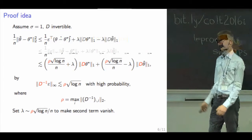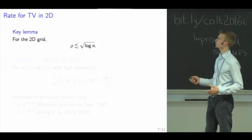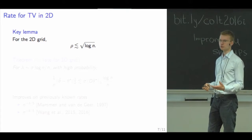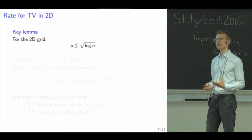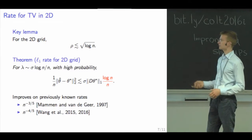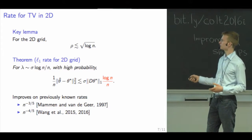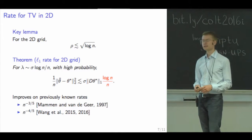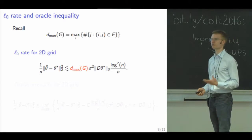In general D does not have to be invertible; we can work with the pseudo-inverse instead. The main quantity to analyze is rho, and the key result we can show is that rho is bounded up to only a log factor. This relies on having an explicit handle on the spectral decomposition of the associated graph Laplacian of the grid. Plugging this back in, we get a fast rate picking up the L1 (total variation) complexity of our signal, which in particular improves on the n to the minus four-fifths result.